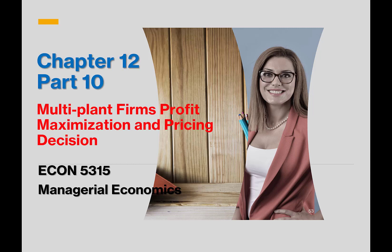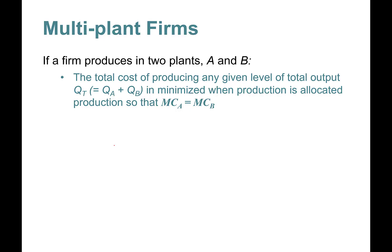Hello everyone, this is Chapter 12 Part 10, the very last part of Chapter 12. In this part we'll talk about multi-plant firms, profit maximization, and pricing decisions. Basically, a multi-plant firm is a company that has more than one plant or factory.